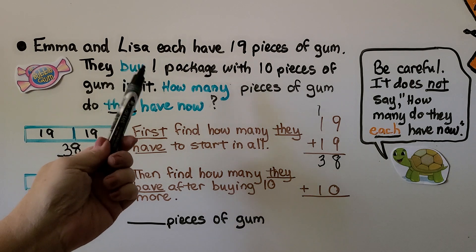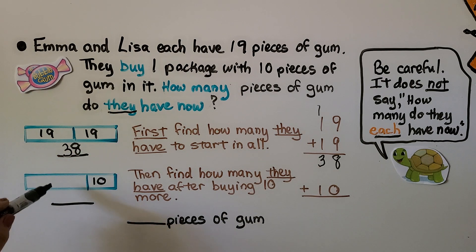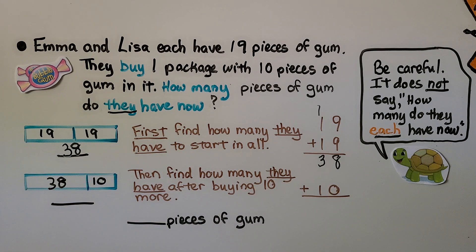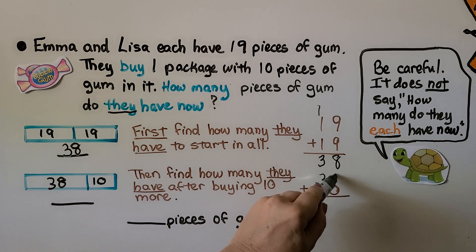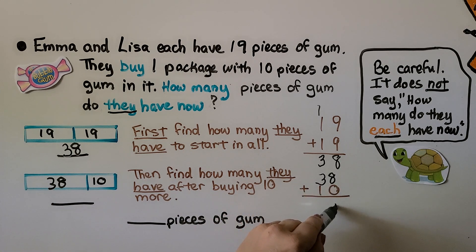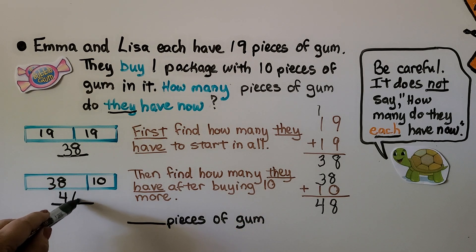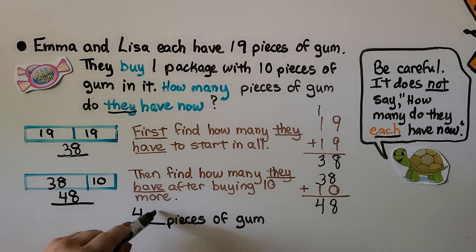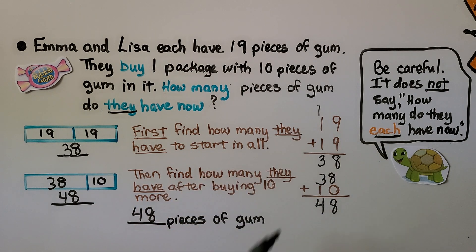Then they bought a package with 10 pieces of gum in it. They had 38, and now we find how many they have after buying 10 more: 38 plus 10. That's an easy one — one more 10, it's 48. We know they have 48 pieces of gum together. To solve this we needed to add and then add again.